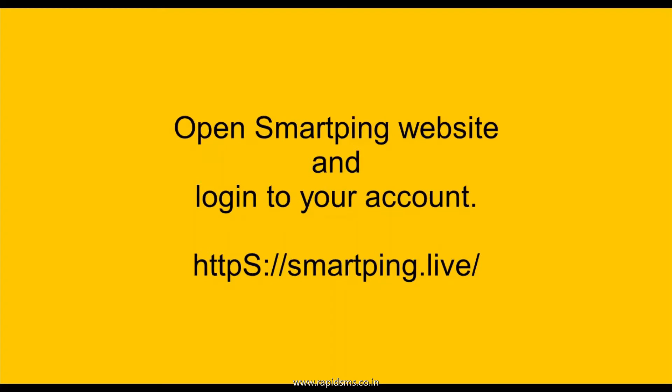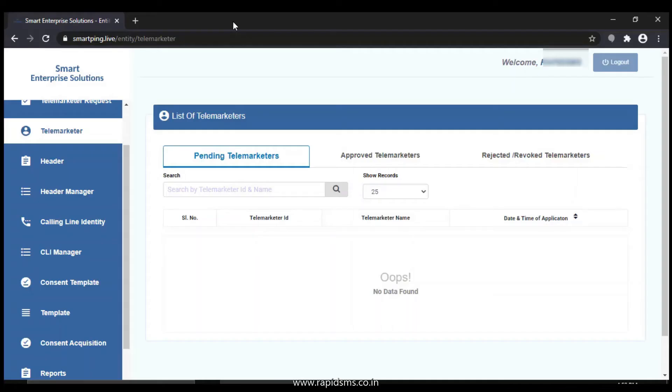Open the SmartPing website and login to your account. Click on Template, then click on Add New Template.